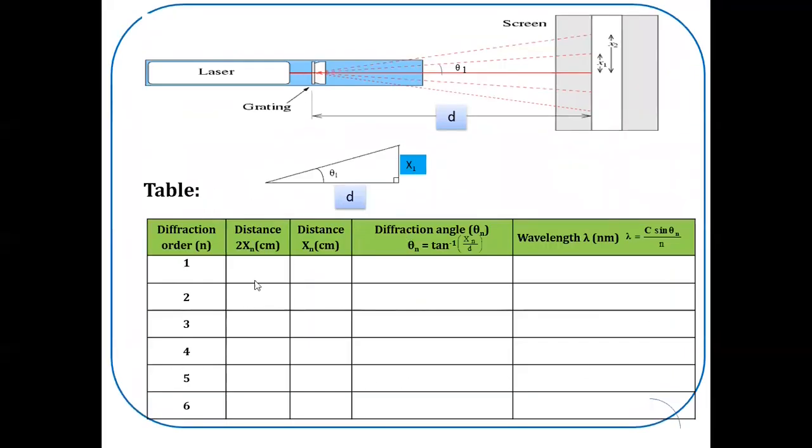Tabulate the data in the tabular column. First column gives the diffraction order. N is equal to 1, 2, 3, 4, 5, 6. I have shown. Note down the distance 2xn from the graph sheet.